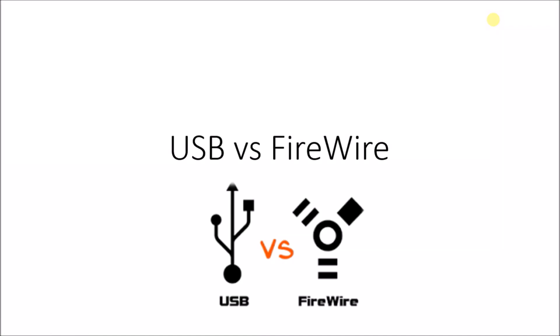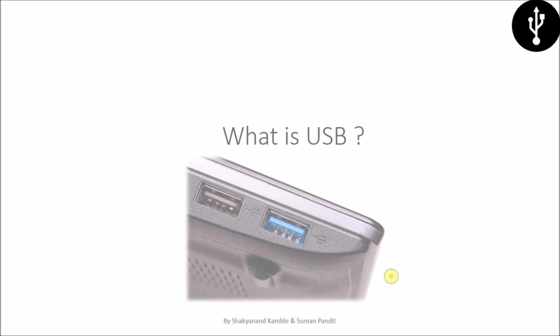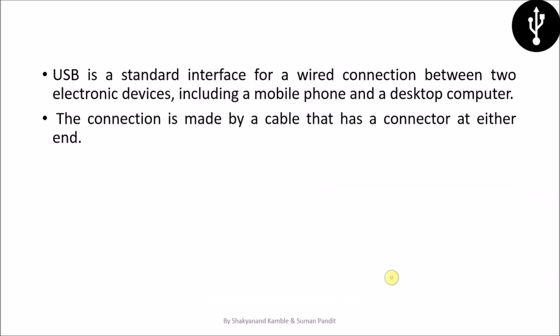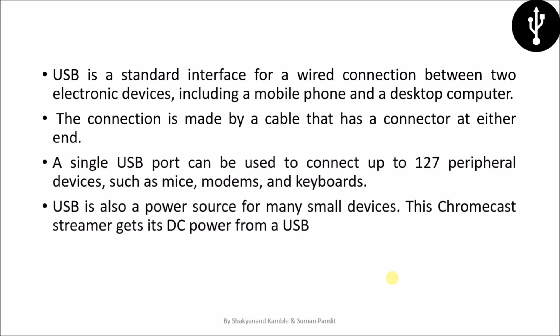Hey guys, today we are going to see the difference between a USB and a FireWire. So, what is a USB? USB is nothing but the short form of Universal Serial Bus. It is a standard interface for a wide connection between two electronic devices, including a mobile phone and a desktop computer. The connection is made by a cable that has a connector at either end.